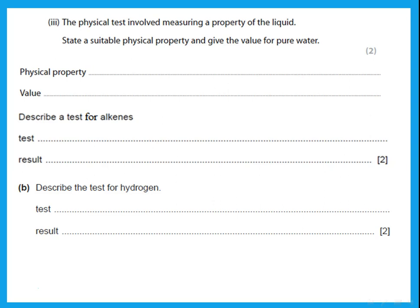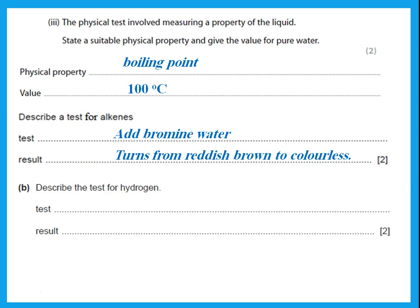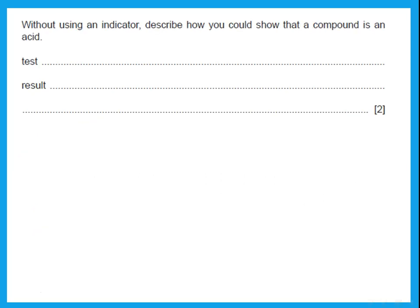For the physical test for water, measure the boiling point — pure water boils at 100 degrees Celsius. Describe a test for alkenes: add bromine water, which turns from reddish-brown to colorless. Memorize these tests. Describe the test for hydrogen: insert a lighted splint — it pops.